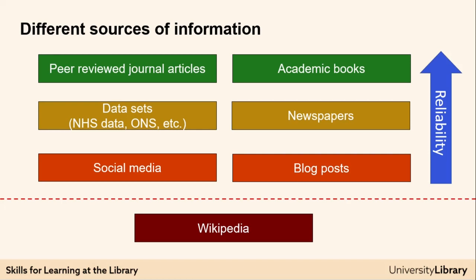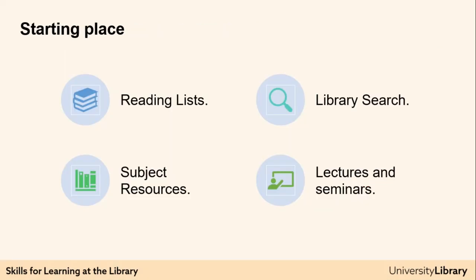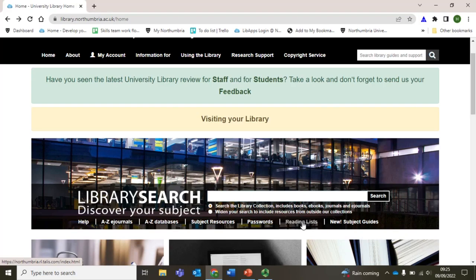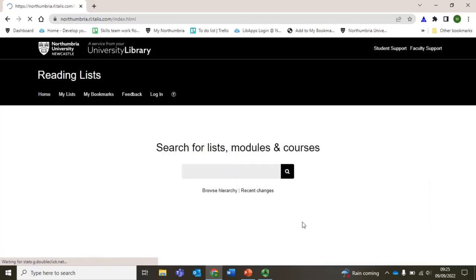So now we know what kind of sources you are looking for, but where can you find them? Module reading lists are a great place to start. These are lists of sources of information created by your module tutor and relevant to your module. They should be linked from your module Blackboard site. Alternatively, you can access them through University Library Online. Just to show you how that works, head to University Library Online and click on the Reading Lists menu item.